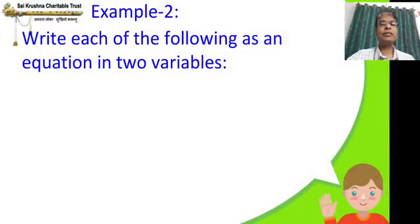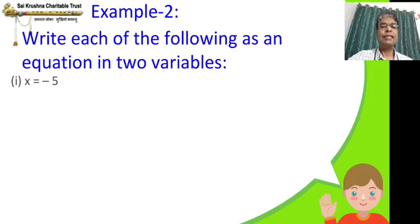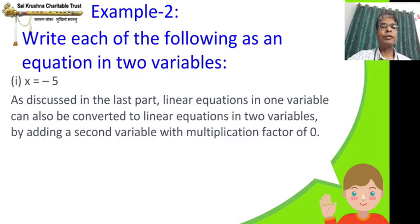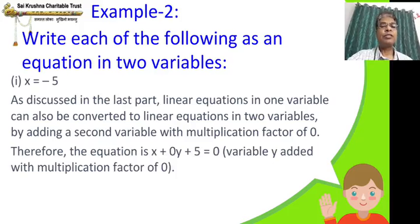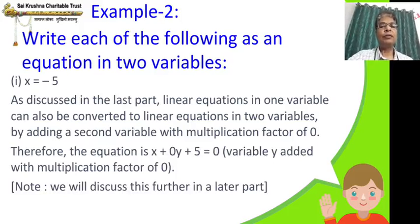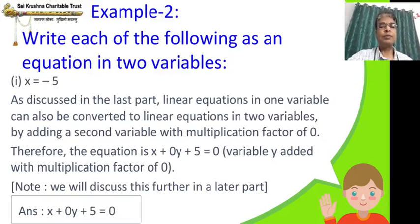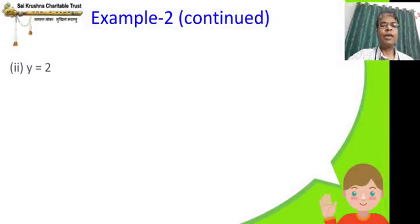Next example: write each of the following as an equation in two variables. x = −5. We have already seen that a linear equation in one variable can be converted to two variables by adding a second variable with a multiplication factor of zero. So: x + 0·y + 5 = 0. The variable y is added with coefficient 0. For y = 2, pause the video and write the answer, then check.